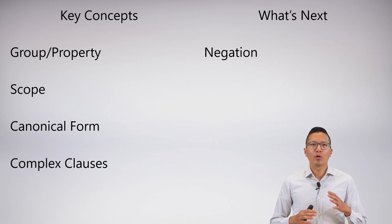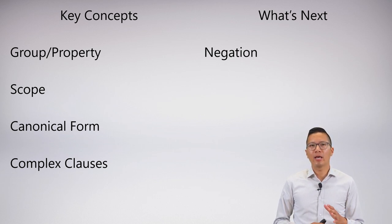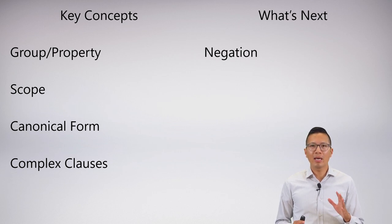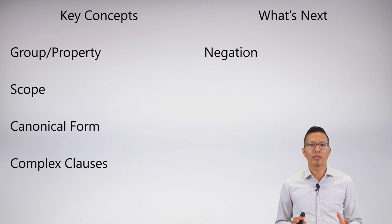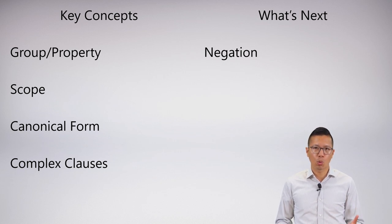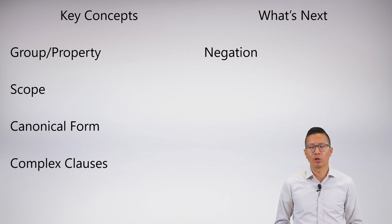We've gone over more of these complex clauses and we're really able to symbolize a lot of things. But you may have noticed that one thing suspiciously missing is negation. I haven't symbolized anything where I have the negation of a quantifier, and that's what we're going to do next.